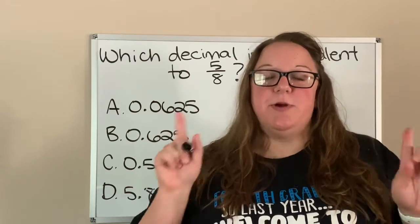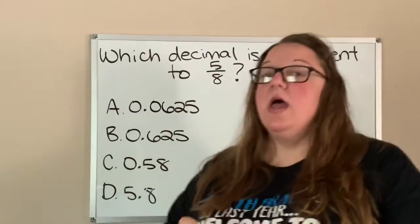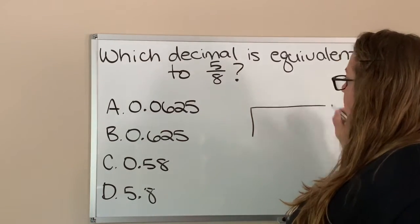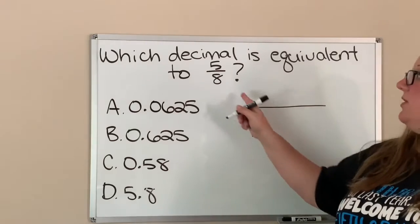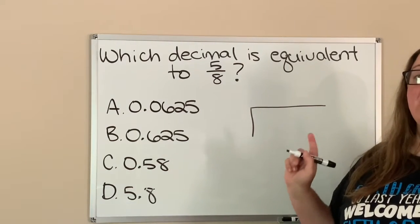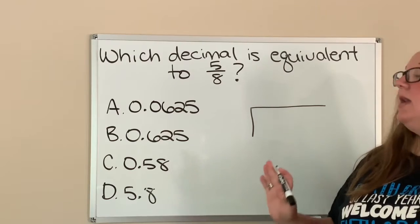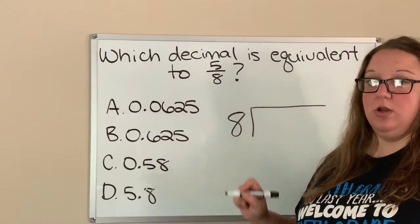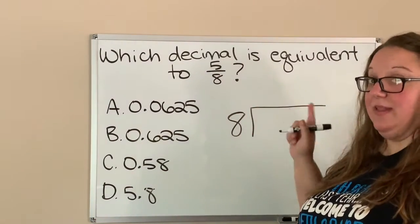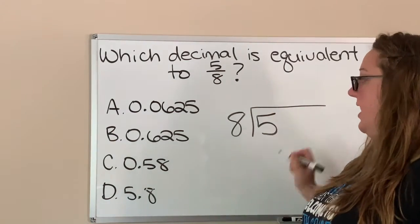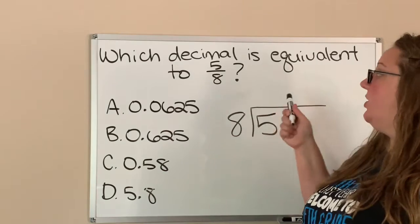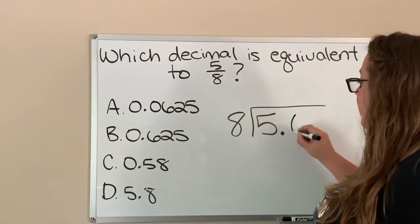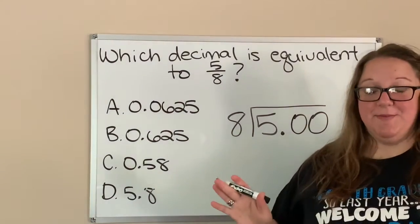The first thing we do is set up our division bar. Now you need to remember: the bottom number, this eight — that is our denominator. The denominator is going to go on the outside of our division bar. Then the numerator, the five, goes on the inside. So denominator always goes on the outside, numerator always goes on the inside. Then we add a decimal and we add two zeros.